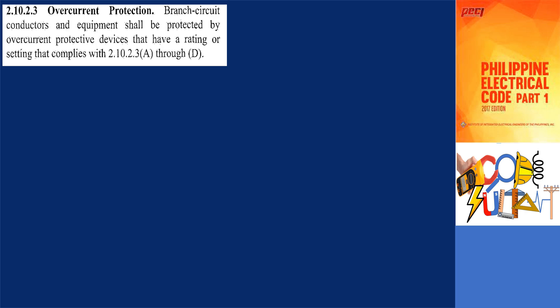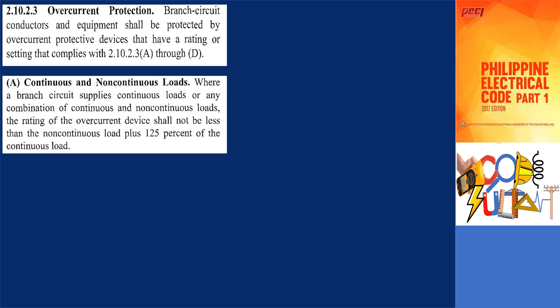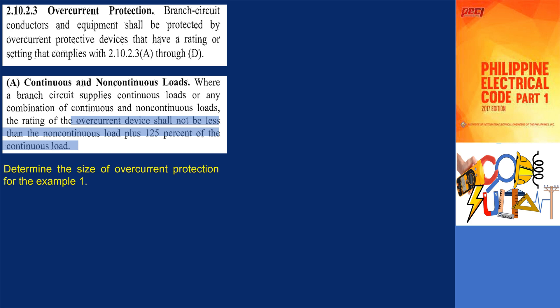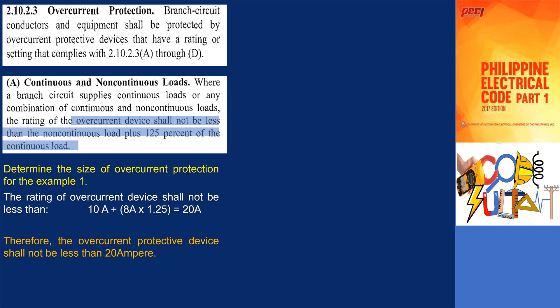For the overcurrent protective devices of the branch circuits, the code rules are in section 2.10.2.3. Branch circuit conductors and equipment shall be protected by overcurrent protective devices that comply with 2.10.2.3a through d. Where a branch circuit supplies continuous loads or any combination of continuous and non-continuous loads, the rating of the overcurrent device shall not be less than the non-continuous load plus 125% of the continuous load. For the previous example, the overcurrent device shall not be less than 10 amperes plus 8 amperes multiplied by 1.25 — therefore, not less than 20 amperes.